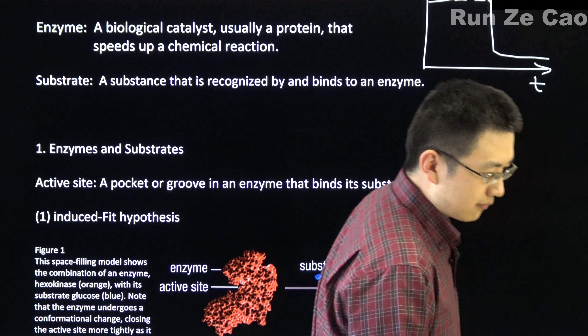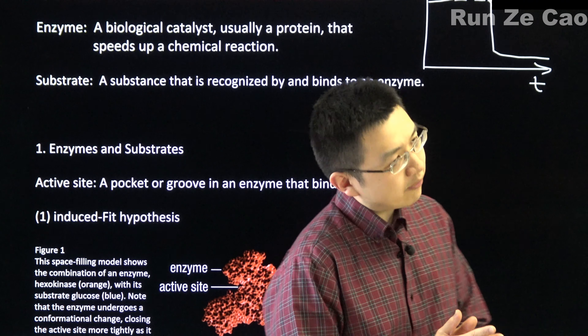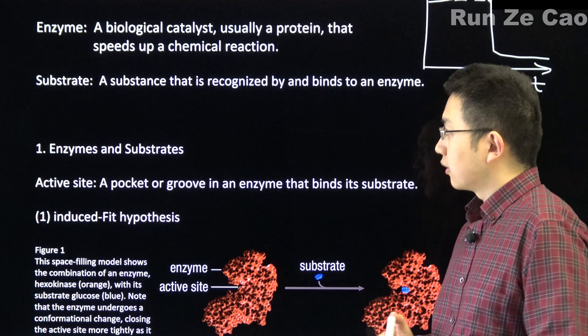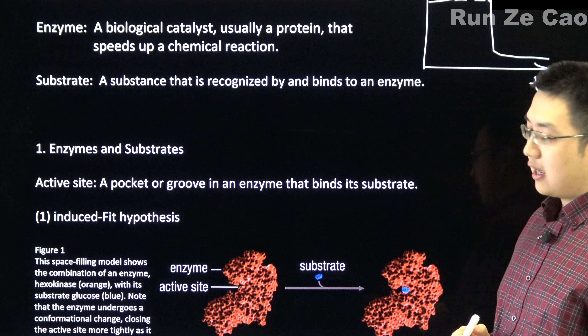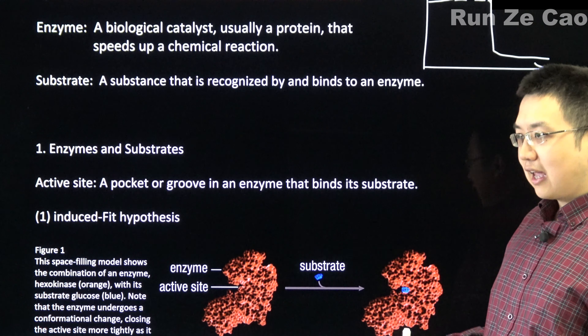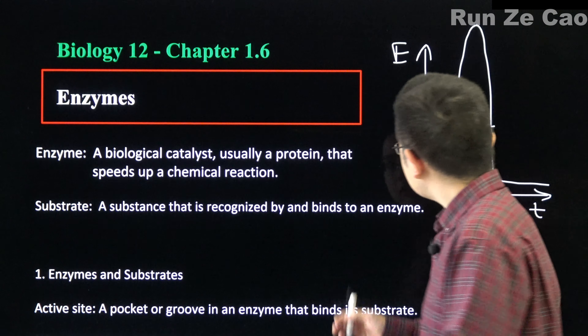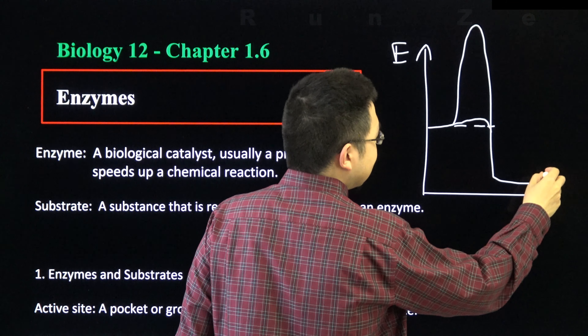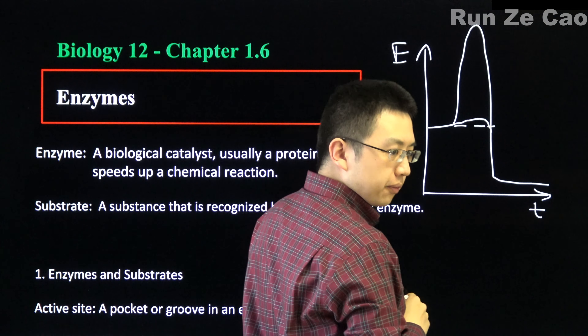For enzymes, reactants are called substrates and they are recognized by and bind to the enzyme. Enzymes can technically catalyze the reaction both ways. Looking at the energy diagram, if we put in enough energy to push some product back over the activation energy hump, it's obviously easier to go back over a smaller hump than a taller one.